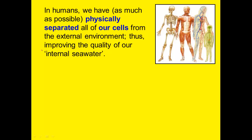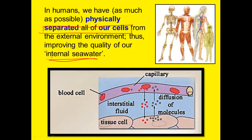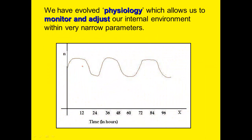In humans, we have basically completely separated as much as possible all of our cells from the external environment, improving the quality of our internal seawater. Inside our bodies we have blood, which blood cells and other liquids travel through; we also have our cells; and in between the blood and the cells is interstitial fluid. All three of those have distinct chemical situations inside them.